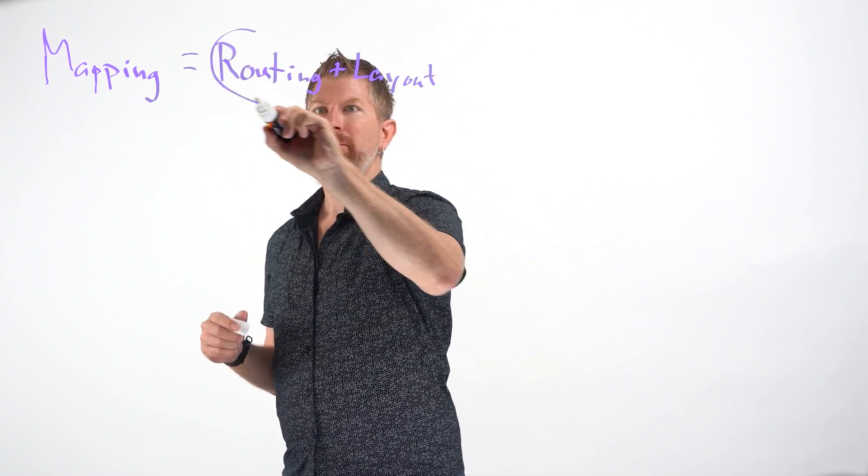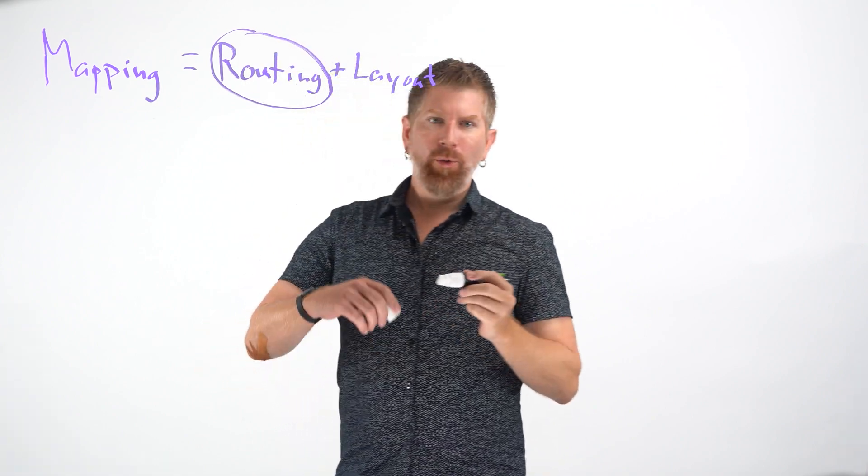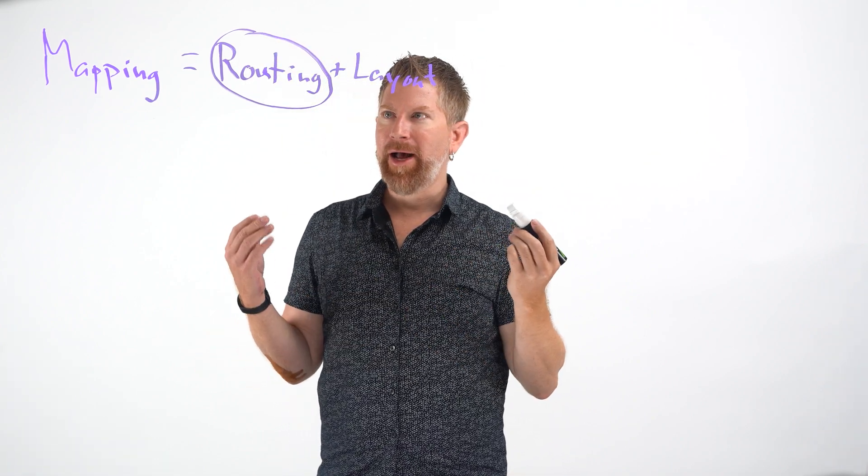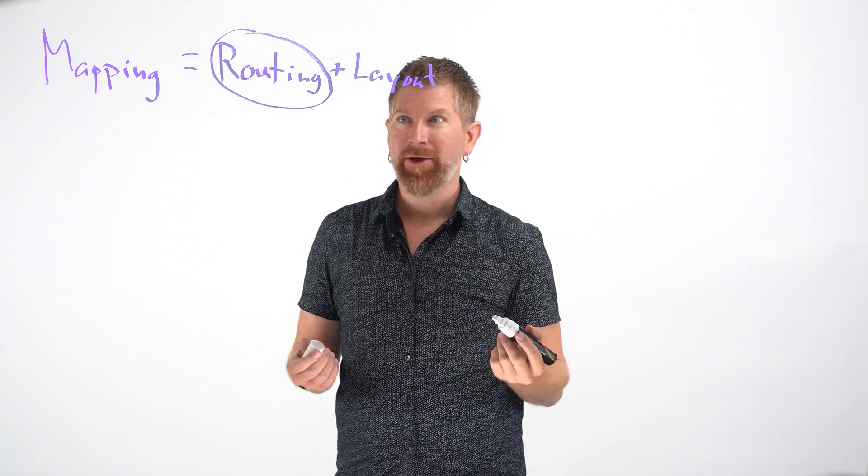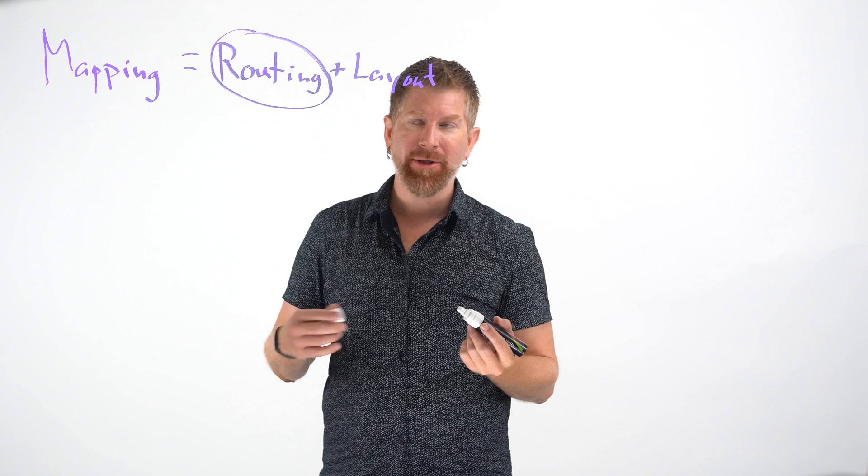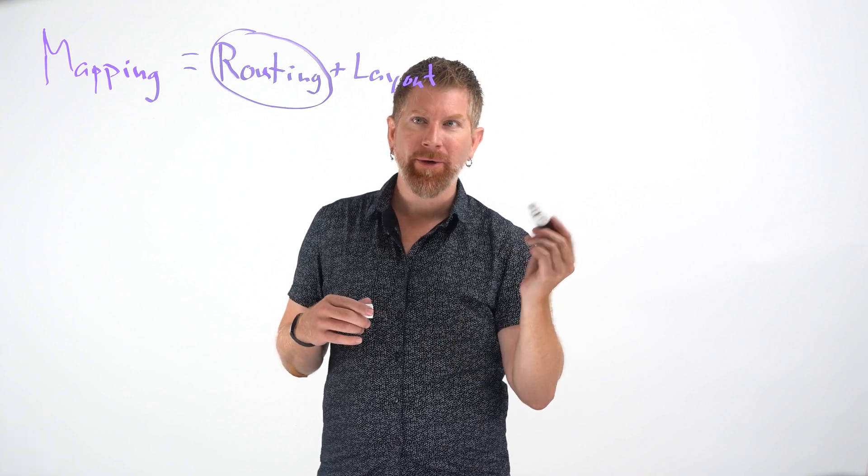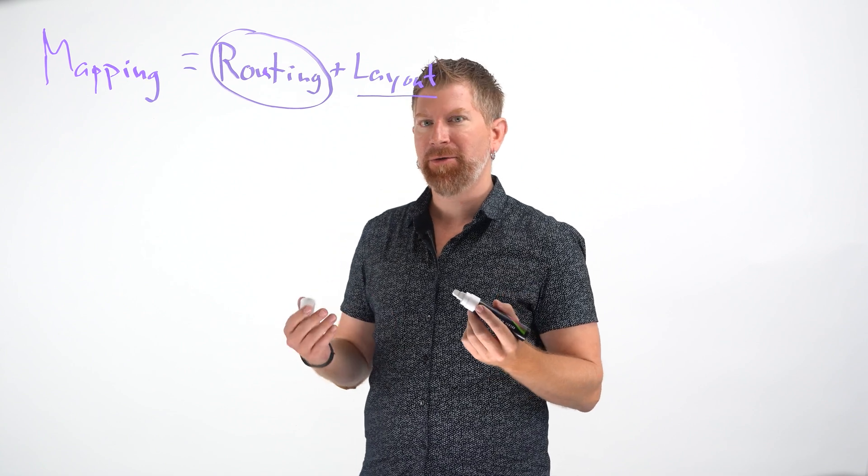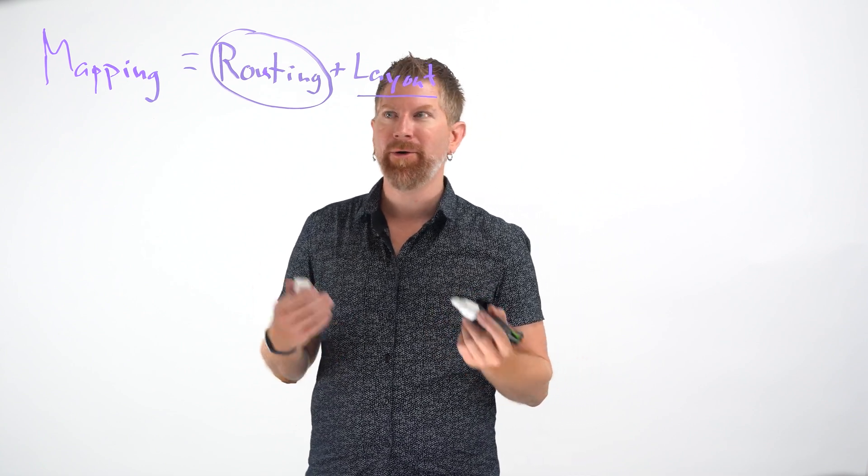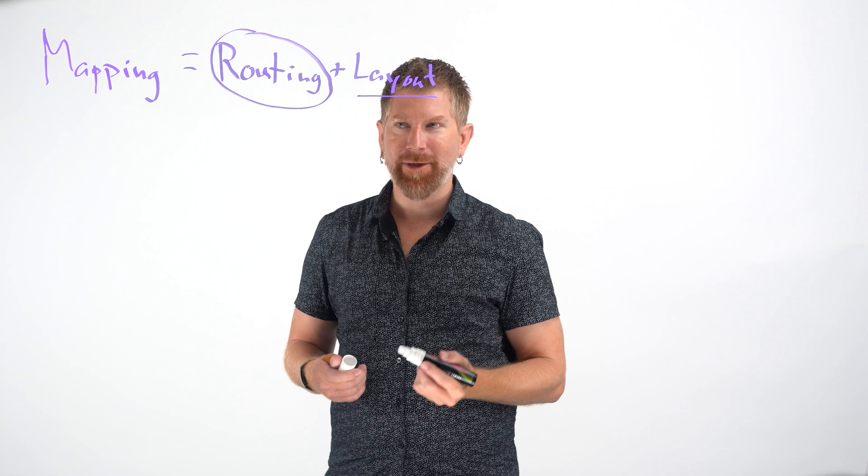Today we're going to talk about routing, which is how to take an algorithmic circuit and map it to a physical system with a more limited connectivity. So you're going to take the topology into account. In a separate video we'll talk about layout, which consists of how to choose the best physical qubits that you could use for your routing that you've done before.